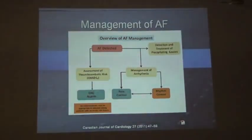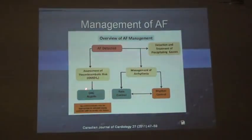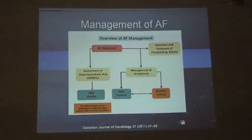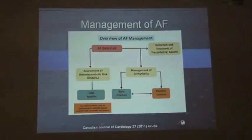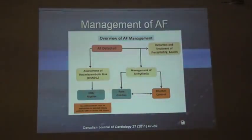AF is an independent risk factor for stroke. The incidence of stroke in AF patients is 5%, and approximately 15% of all strokes are caused by AF. Ischemic strokes associated with atrial fibrillation are neurologically worse than ordinary ischemic strokes. To assess thromboembolic risk, we use the CHADS2 score — a very simple algorithm every clinician should apply when they see a patient with chronic atrial fibrillation.